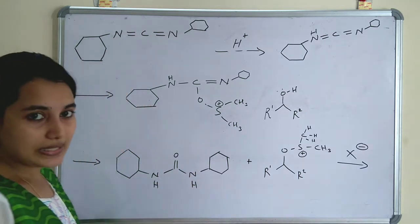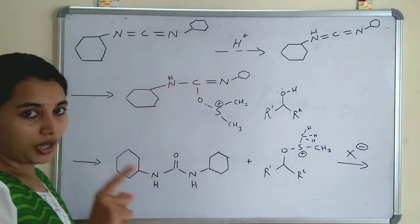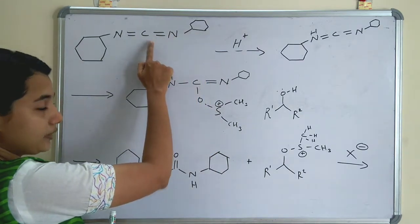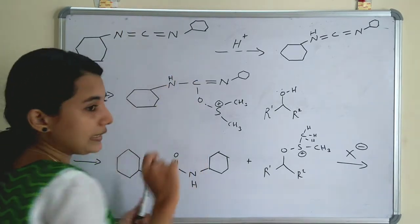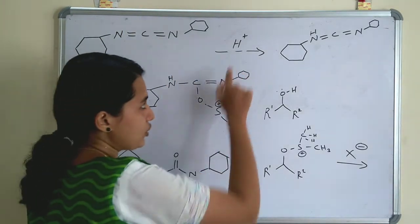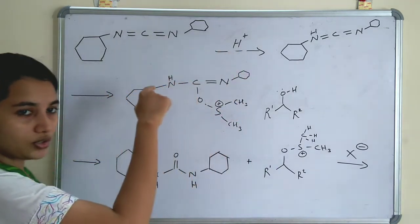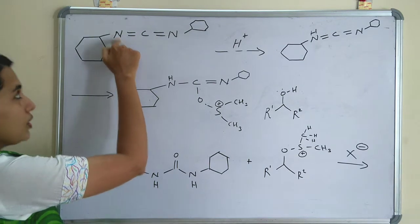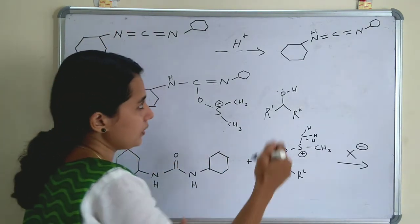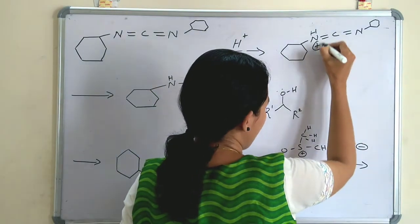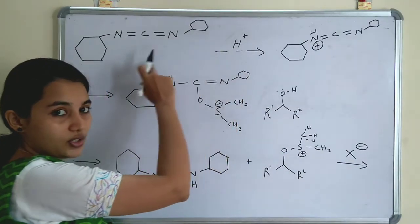First we will take DCC — dicyclohexylcarbodiimide — which has the structure: cyclohexyl–N=C=N–cyclohexyl. H⁺ from HX is attached to nitrogen, so nitrogen becomes NH⁺, giving a positive charge on nitrogen when H⁺ is attached.